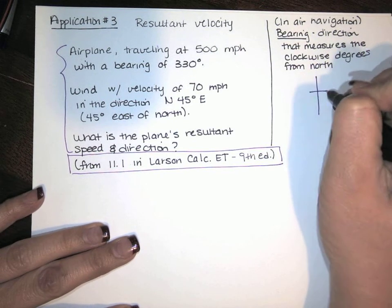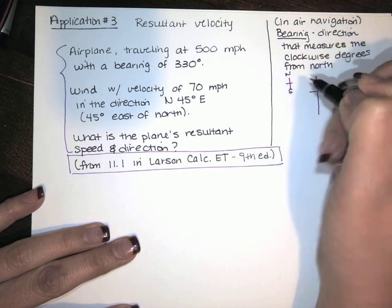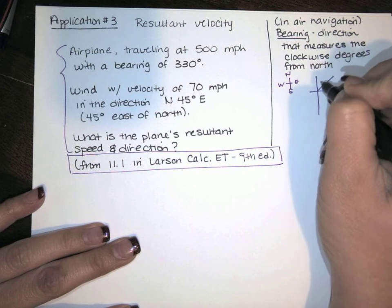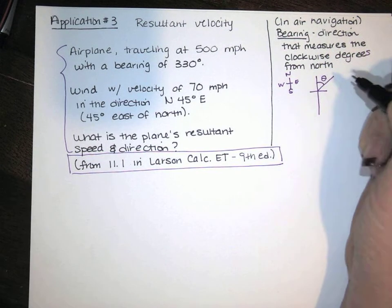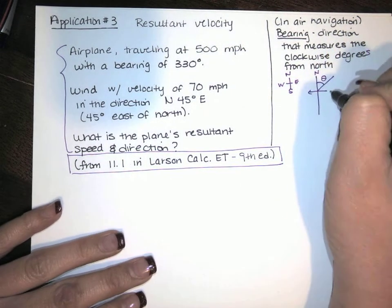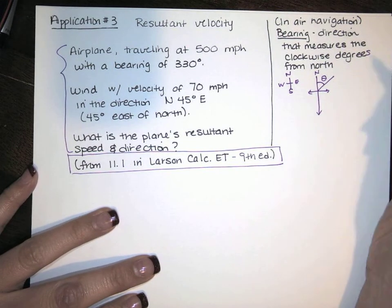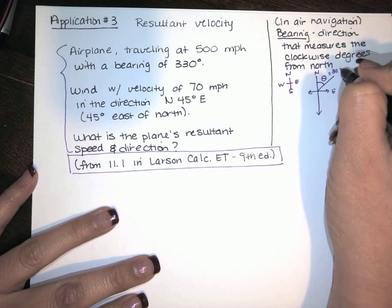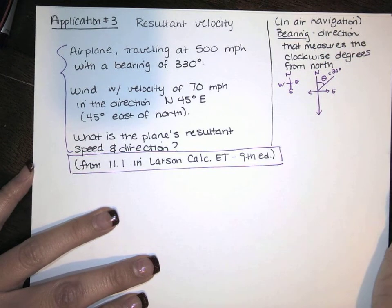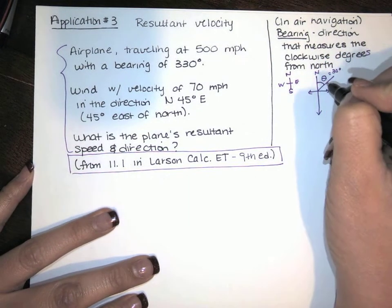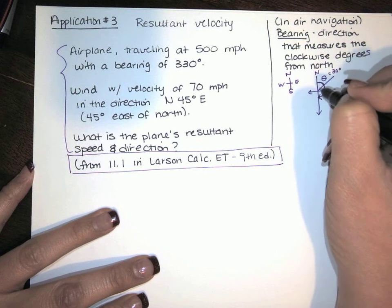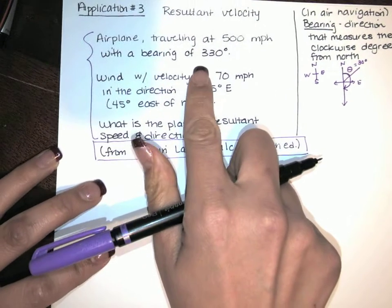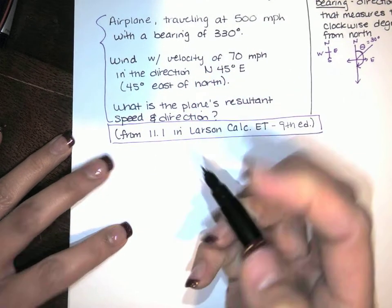So if this is north, south, east, and west, and theta is given in degrees, that might be the bearing. If we are going 30 degrees from north, that is a bearing of 30 degrees. A bearing of 180 degrees would be going this way. So when they tell us that the airplane has a bearing of 330 degrees, what they're saying is...